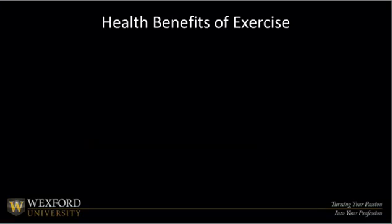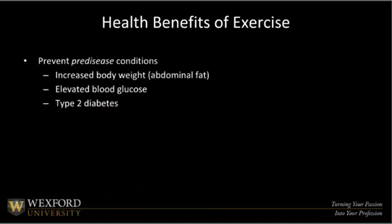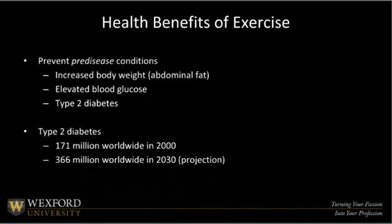We also have to recognize casual fitness enthusiasts who get benefits from exercise in terms of preventing pre-disease conditions. This can include abdominal fat accumulating around the waistline as an indicator or risk factor for obesity, or elevated glucose levels in the blood, and even type 2 diabetes. With respect to diabetes, we can expect that the worldwide population will see the numbers for those affected by type 2 diabetes to double.